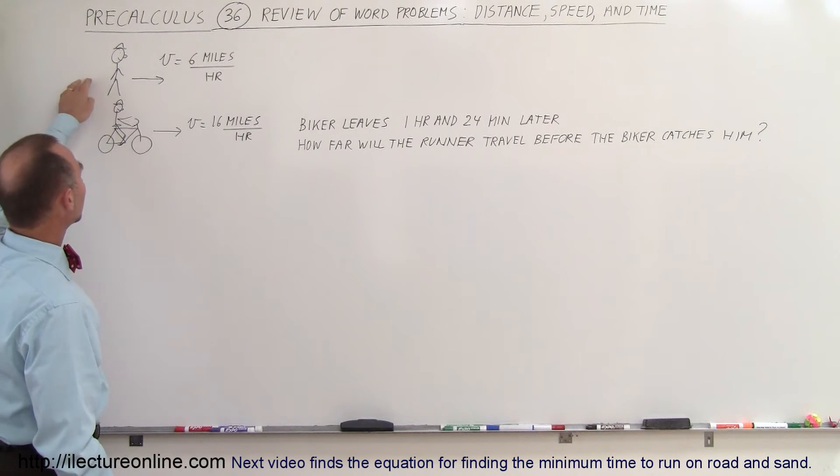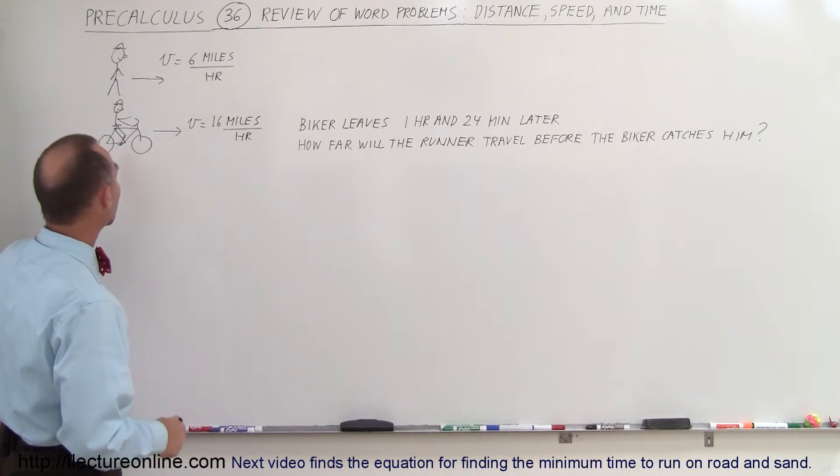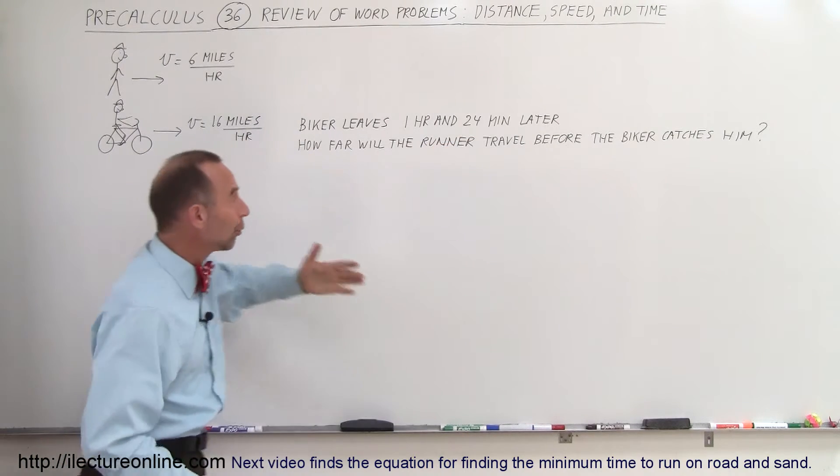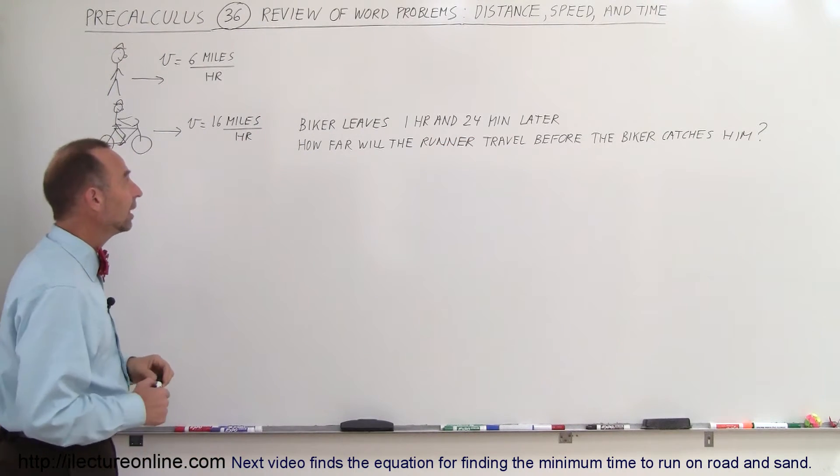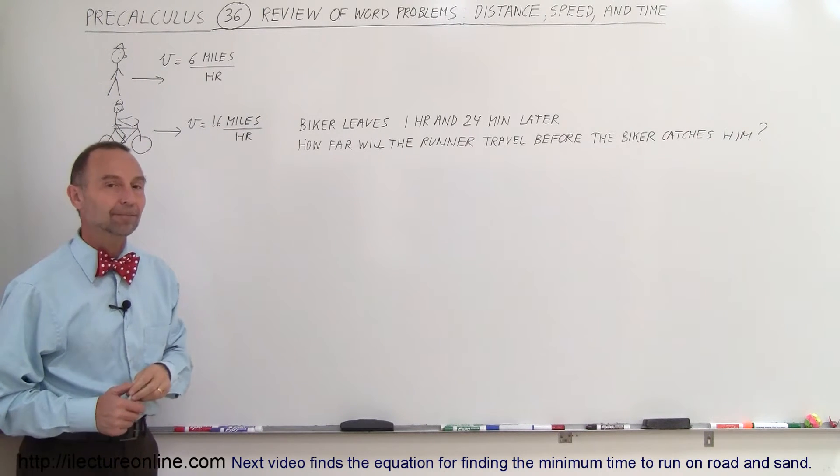So let's say we have a runner that can run at 6 miles per hour and we have a biker that can bike at 16 miles per hour. Let's say that the biker leaves one hour and 24 minutes after the runner has gotten his head start and the question is how far will the runner travel before the biker catches him.